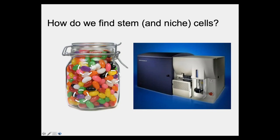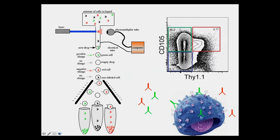To address this question we used a technique called flow cytometry. For those not familiar with this technology, you can think of it as a high-throughput jelly bean sorter. It gives us the ability to separate out cells of a very complex tissue individually by virtue of their expression of unique proteins on their cell surface.